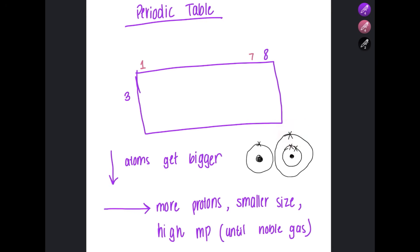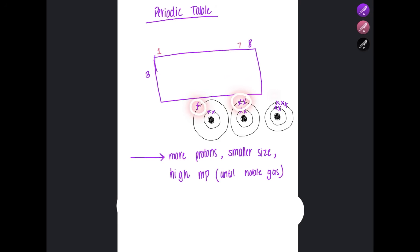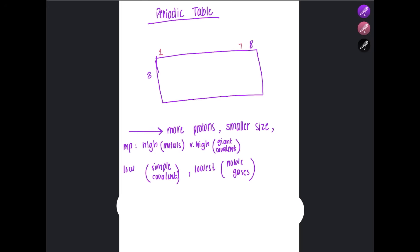As you go down a group, the outer electron is further away from the nucleus because each element has one extra electron shell, so the atomic radius increases and the atom gets bigger. As you move across a period, the number of electron shells remains the same, but the number of valence electrons and protons increases. The greater positive nuclear charge pulls electrons closer to the nucleus, so the atomic radius decreases as you move across a period.